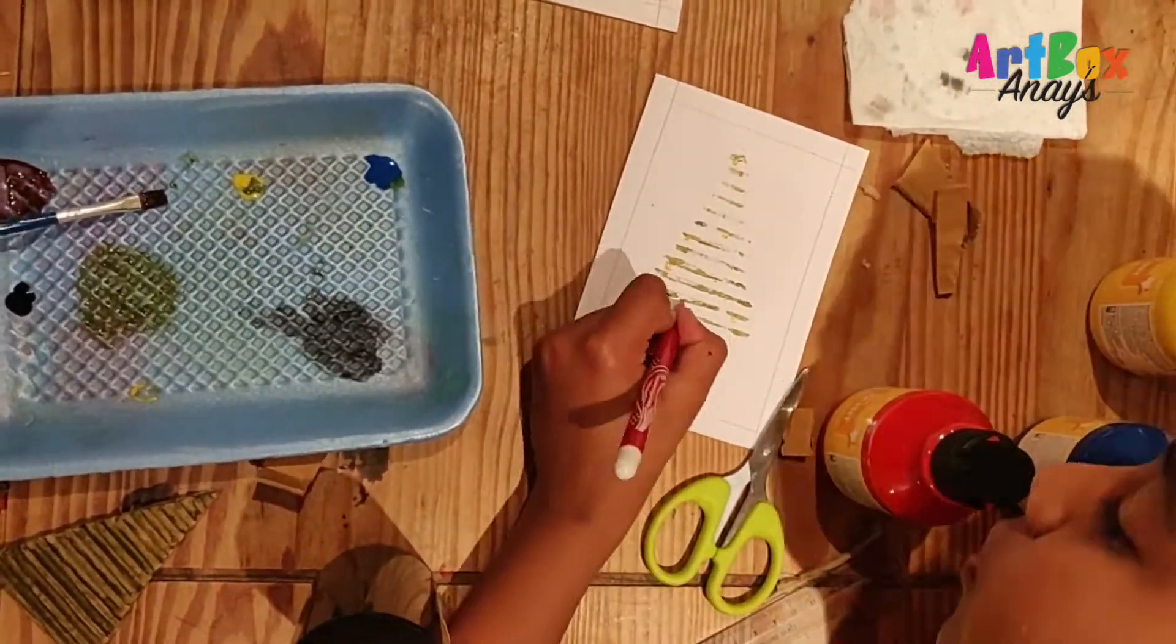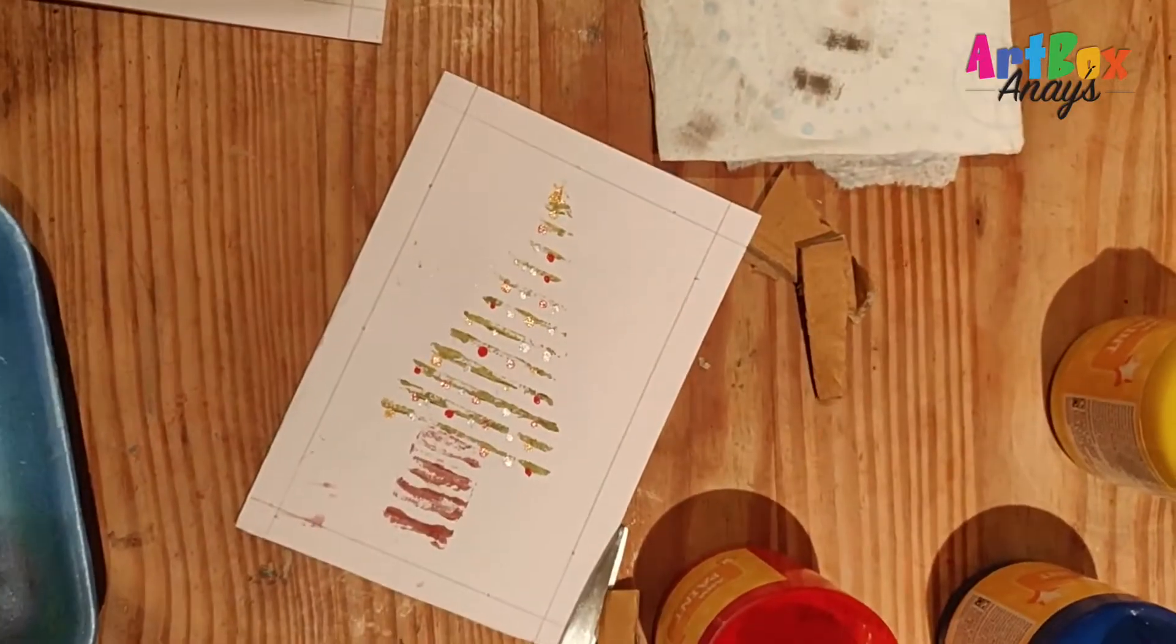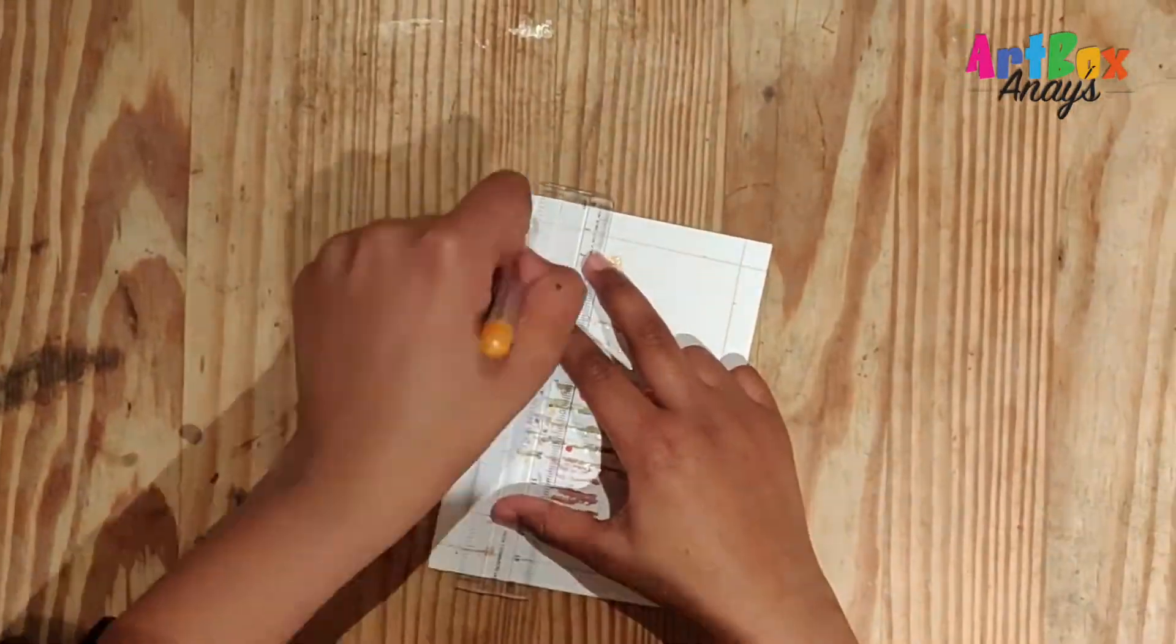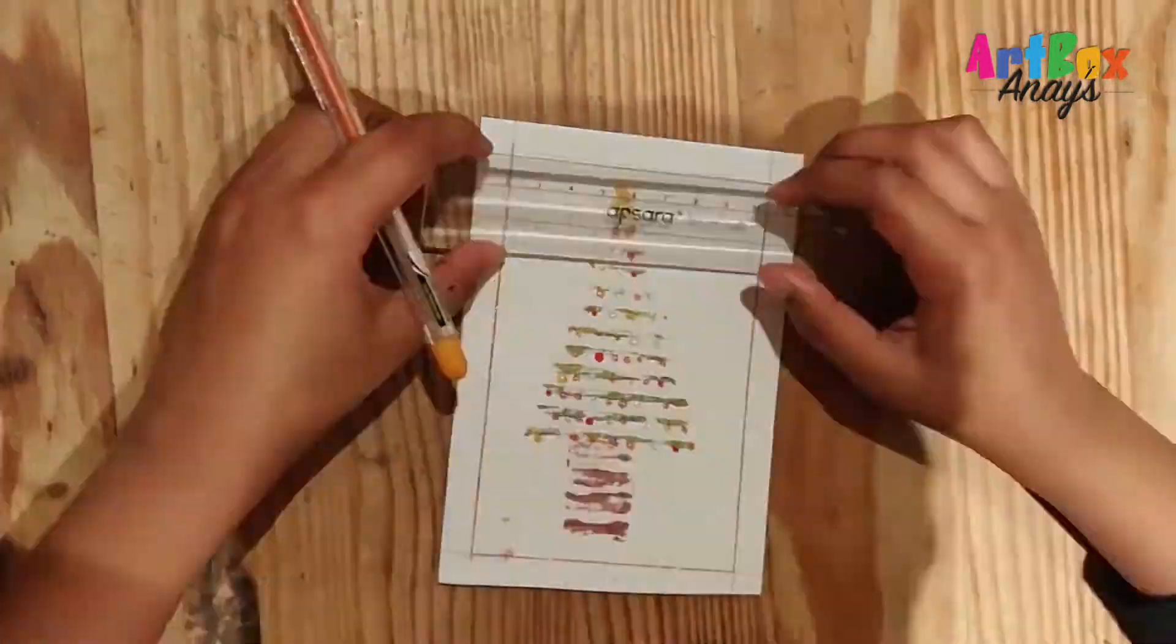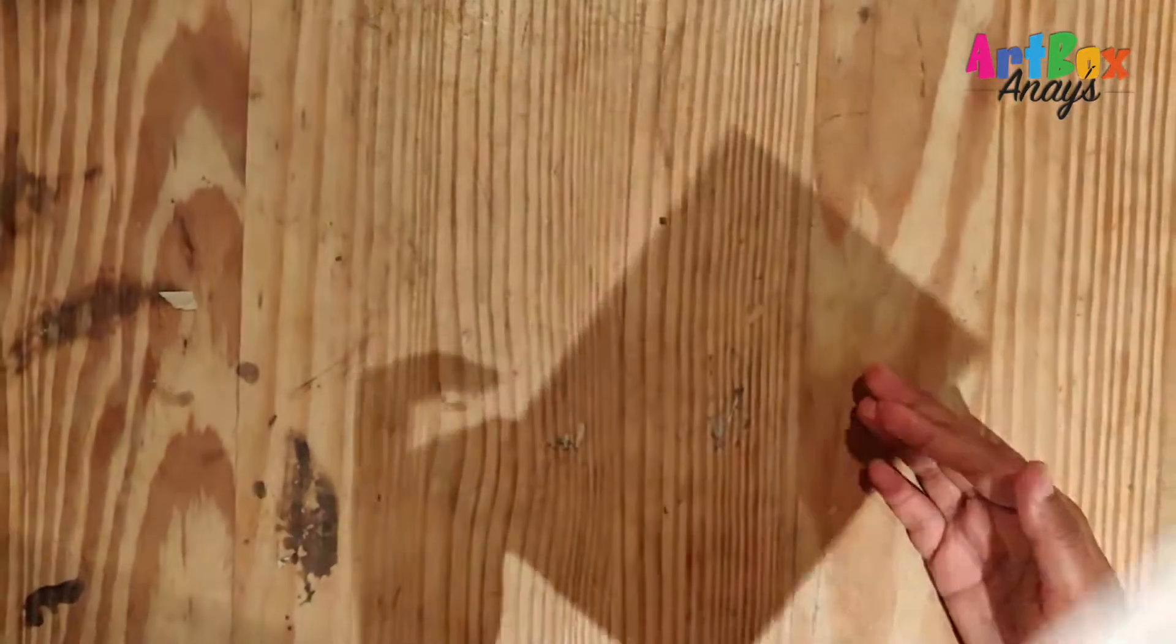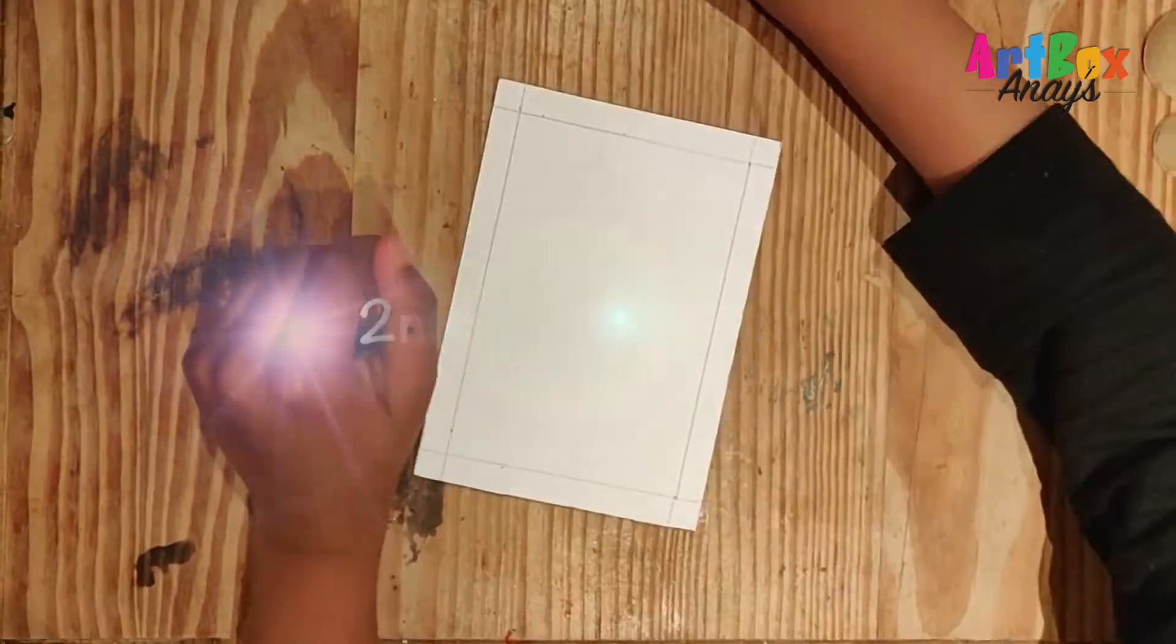And decorate our Christmas tree with some glitter paints. See this guys, it's looking beautiful. Now guys, I'm going to draw a border. So guys, now this is looking so beautiful and so let's move on to our next one.